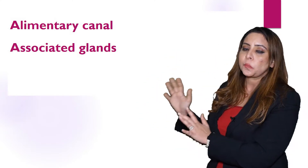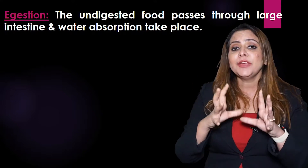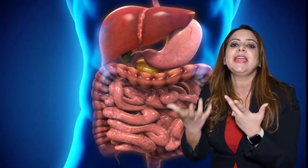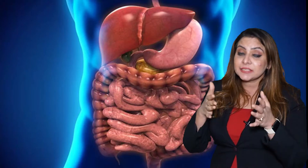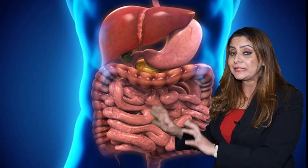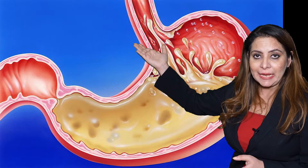Now let's discuss the associated glands. A gland refers to a group of cells with the special property of secreting something. In the digestive system, the secretion is enzymes. Enzymes are biocatalysts - they catalyze reactions and increase the rate of reaction. Here, they break down complex food into simpler forms, playing a very important role.